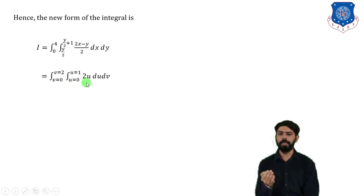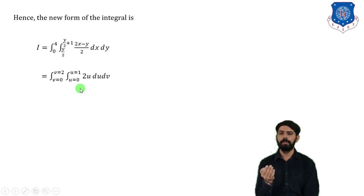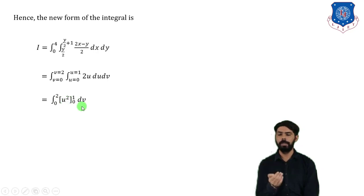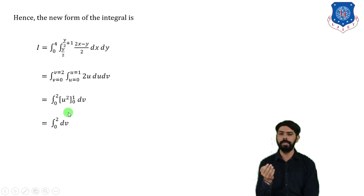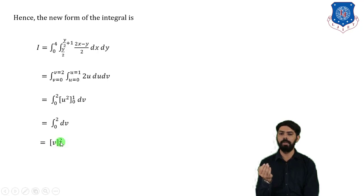Integrating 2u with respect to u gives u². Evaluating from 0 to 1 yields 1 − 0 = 1. This leaves the integral ∫(0 to 2) 1 dv. Integrating 1 with respect to v gives v, evaluated from 0 to 2, which is 2 − 0 = 2. Therefore, the answer to this question is 2.